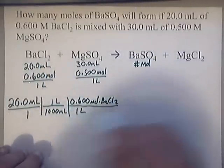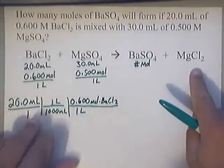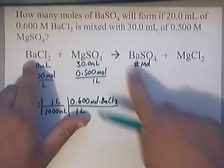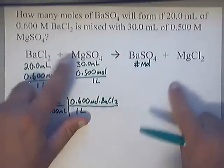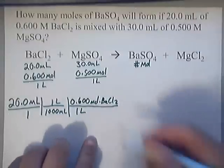So I've got moles of that. Now if you look at the balanced equation, it is balanced. I've already checked. Notice that 1 Ba, 1 Ba, 2 Cls, 2 Cls, 1 Mg, 1 Mg, 1 SO₄, 1 SO₄. Okay, it's balanced.